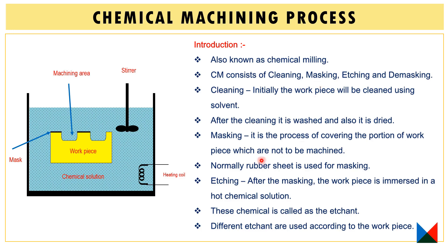After cleaning, you move on to the masking process. Masking is the process of covering the portions of the workpiece which are not to be machined. We want to machine only certain areas, so other areas must be masked so that unwanted areas will not be machined. Normally, a rubber sheet is used for the masking process.